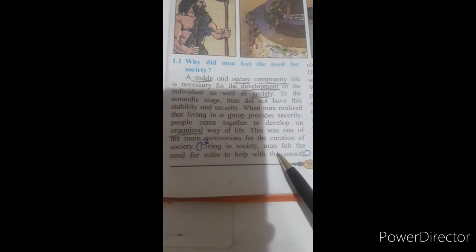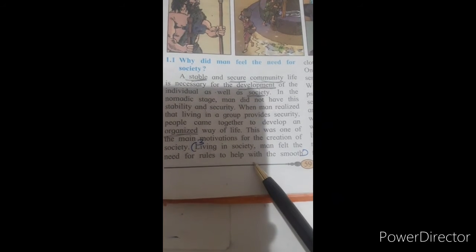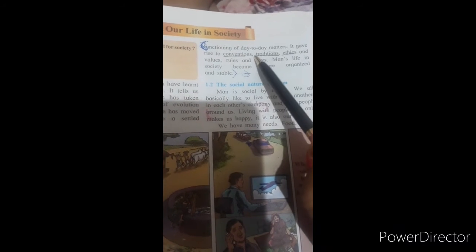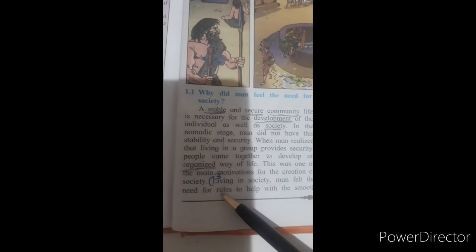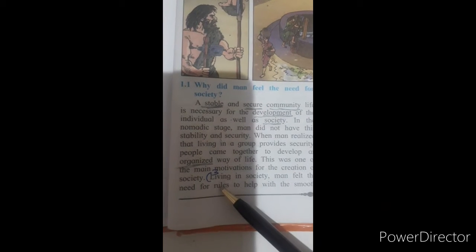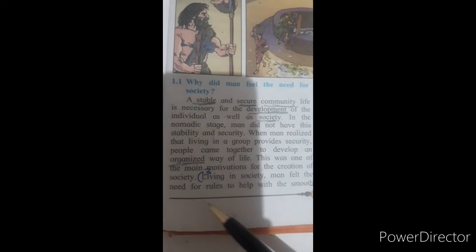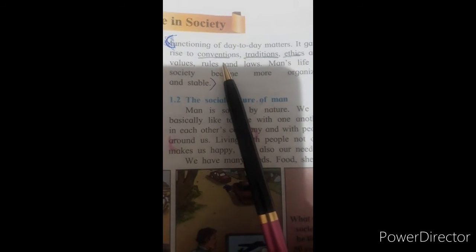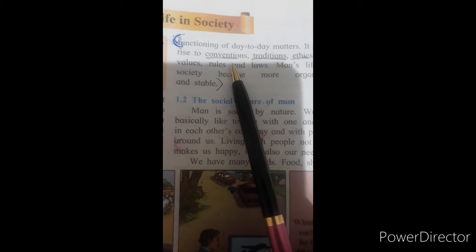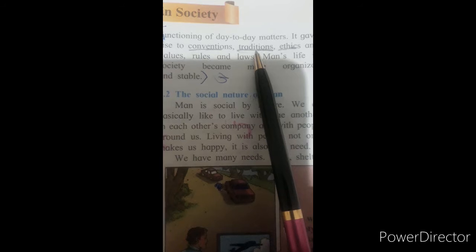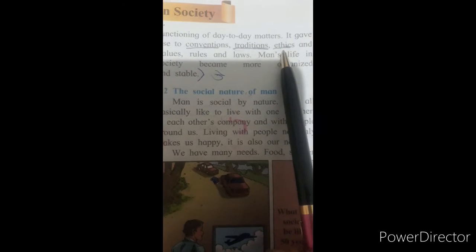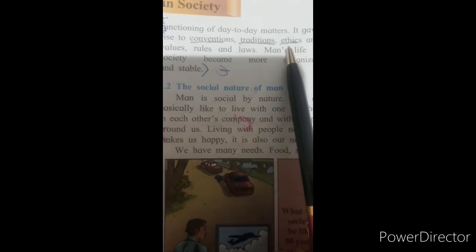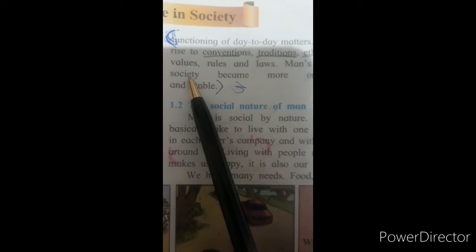Living in society, man felt the need for rules to help with the smooth functioning of day-to-day matters. For smooth living community, what is needed? Need of rules. You come to schools, you have to follow rules like that. For community, also need rules. It gave rise to conventions. Conventions means a traditional way of behaving. Ethics means study about what is right or wrong in human behavior. Value means the amount of money that something is worth.